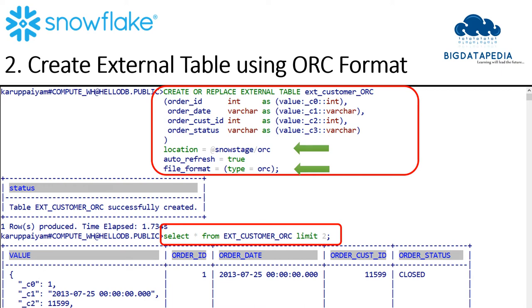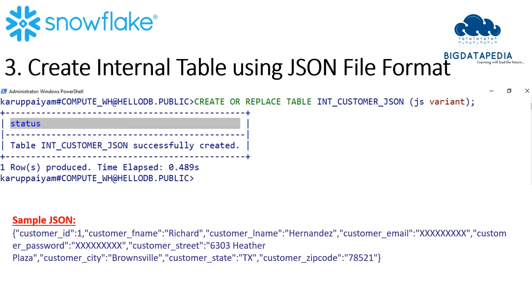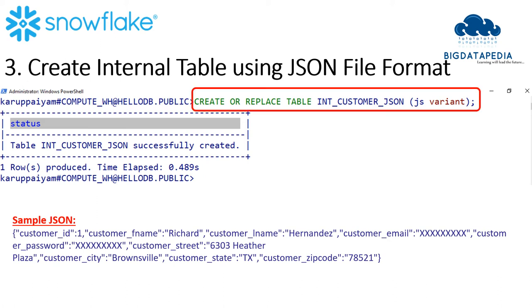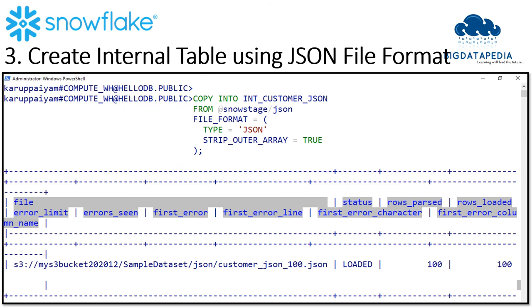For JSON, we will try with an internal table. JSON is a kind of semi-structured data, so we have to handle it using a VARIANT type. I create a single column with VARIANT data type here, and we can go in and pick the data using this variant type. Now we just load the data into the table using the COPY command, declaring the path of the stage and file format as JSON.